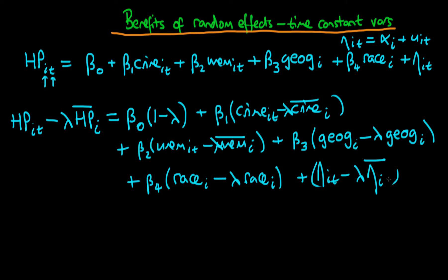So we've got this relatively complicated looking expression here, but what it is actually telling us is quite simple. In general, lambda lies between 0 and 1. And because of the fact it lies between 0 and 1, the terms which have time-constant factors, which are geography and race, actually aren't going to disappear.